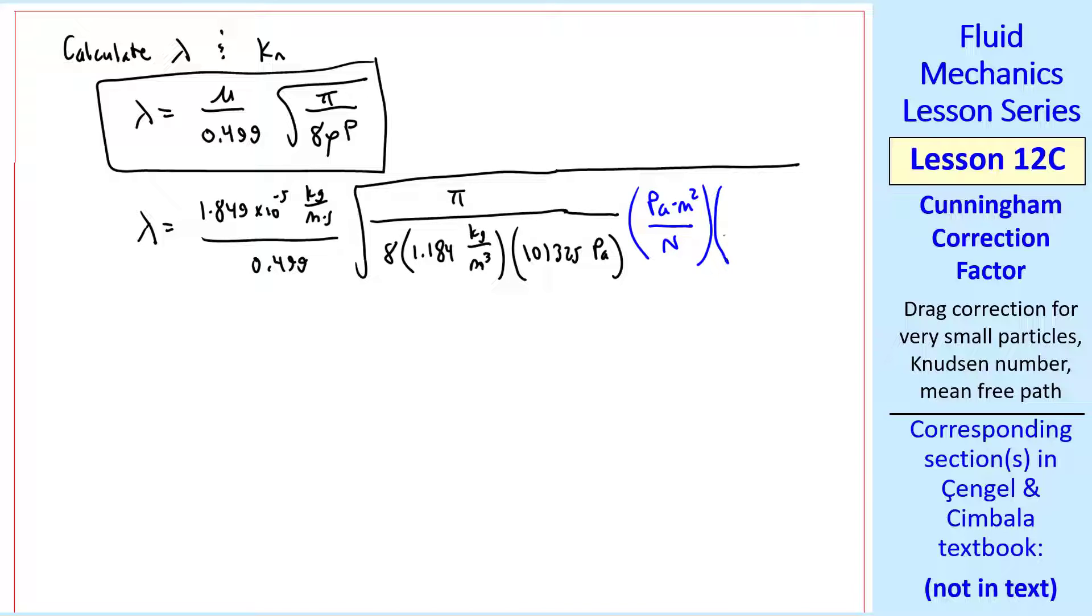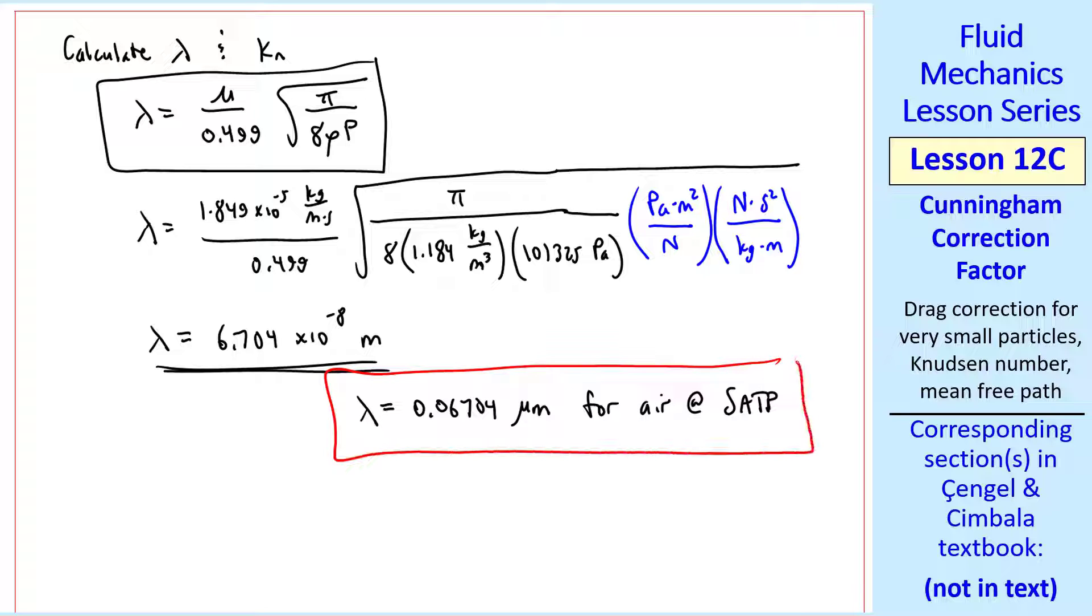We need a conversion factor for pascals, and another one for newtons. And we get lambda equals 6.704 times 10 to the minus 8th meters. I'll write this as 0.06704 microns for air at standard ambient temperature and pressure.